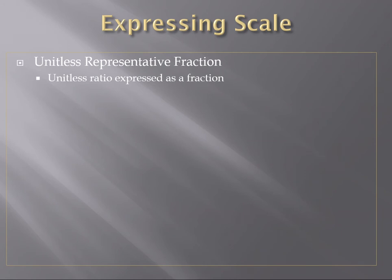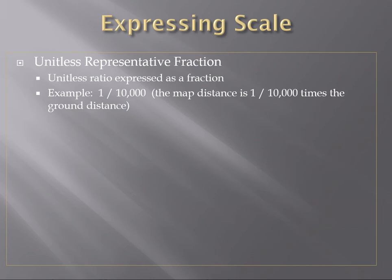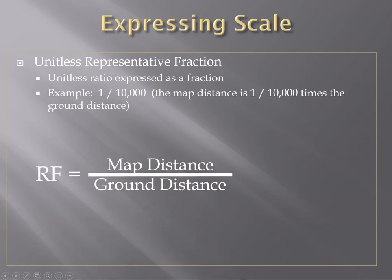So the representative fraction is expressed as a fraction, as I mentioned. So instead of a colon, we use a slash, it means the same thing. So the map distance is one, for example, and the ground distance is 10,000. So that comes down to this representative fraction equation, which we're going to be using to do all of our calculations. That is going to be map distance over ground distance. And I'm going to be shortening it down to dm over dg. So dm over dg is always equal to this representative fraction.